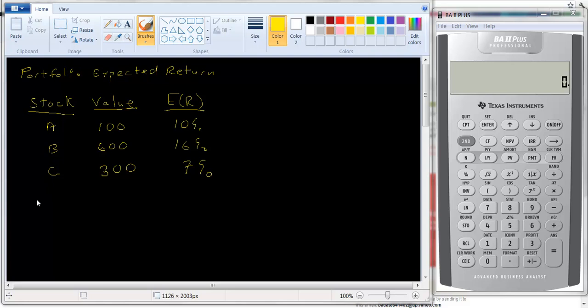In a previous tutorial we talked about how to calculate the expected return for a security. In that case we had different states of the world and we just took a weighted average in order to find the expected return of the stock.